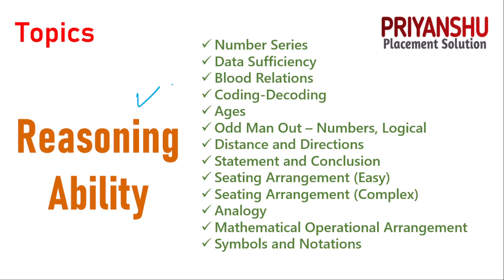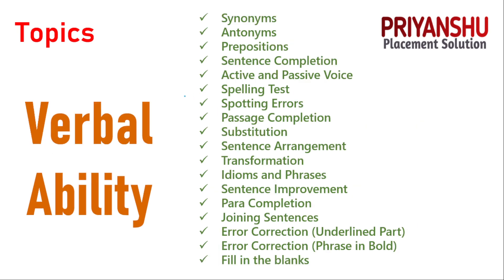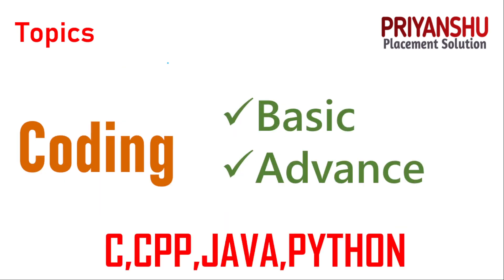This is the Reasoning Ability topics list — take a screenshot if you want. Next is Verbal Ability — take a screenshot as well. For coding, in Basic they are asking questions from strings, arrays, loops, and if-else, but in Advanced they will ask Data Structures and Algorithms.